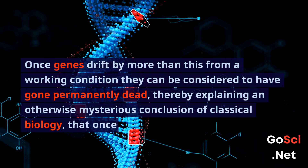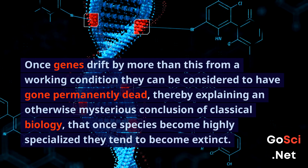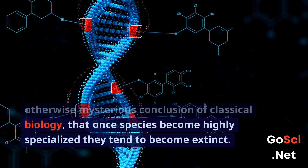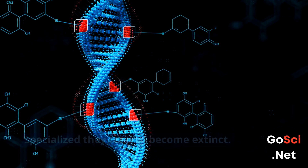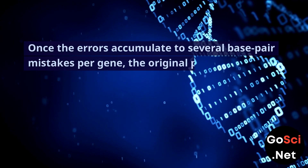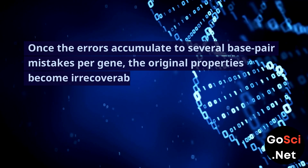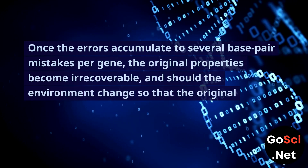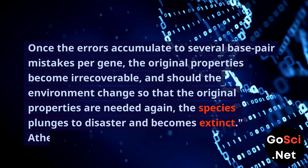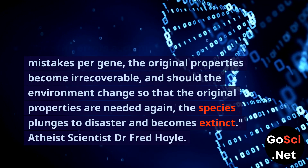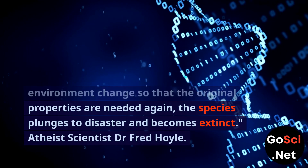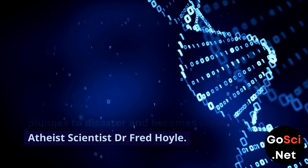This thereby explains an otherwise mysterious conclusion of classical biology: that once species become highly specialized, they tend to become extinct. Once the errors accumulate to several base pair mistakes per gene, the original properties become irrecoverable. Should the environment change so that the original properties are needed again, the species plunges to disaster and becomes extinct. — Atheist scientist Dr. Fred Hoyle.